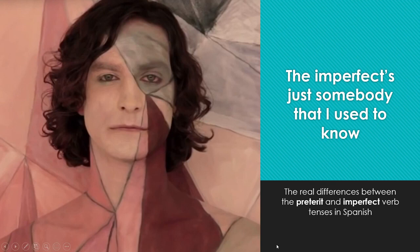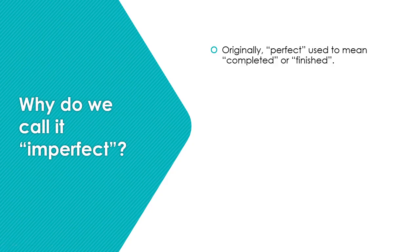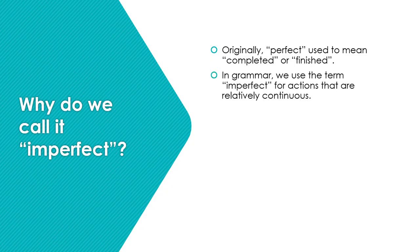The imperfect is just somebody that I used to know. Let's talk about the real differences between the preterite and the imperfect verb tenses in Spanish. A really basic question to ask about this topic is why do we call it imperfect? Originally, 'perfect' used to mean completed or finished — something that was done and completely done in the past. In grammar, we use the term imperfect for actions that are relatively continuous, or things that happen several times, not just once.